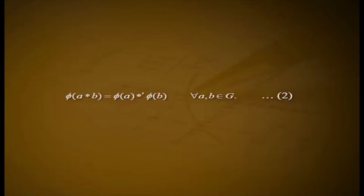Remark 1. In equation 1, the product ab on the left hand side takes place in G, while the product phi of a into phi of b on the right hand side takes place in G dash. More precisely, if G is with the operation star and G dash with the operation star dash, then a homomorphism phi from G to G dash satisfies: phi of a star b is equal to phi of a star dash phi of b for every a, b belonging to G.